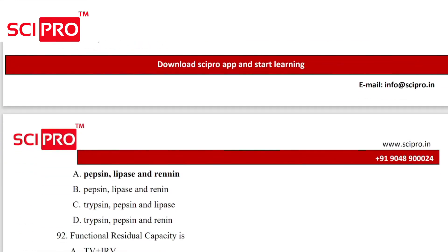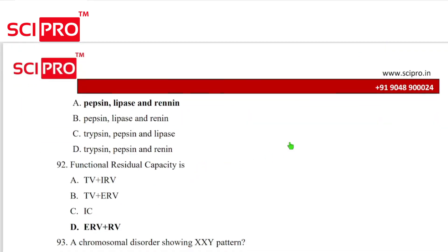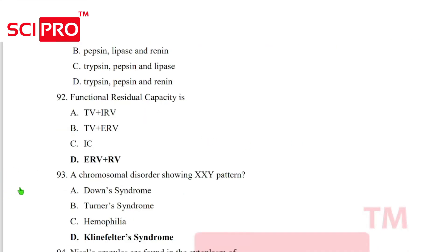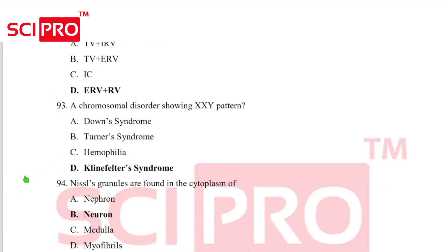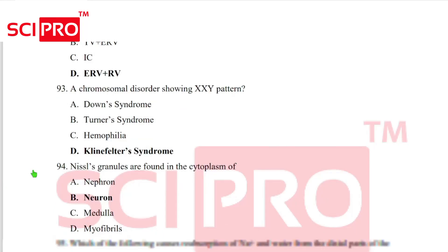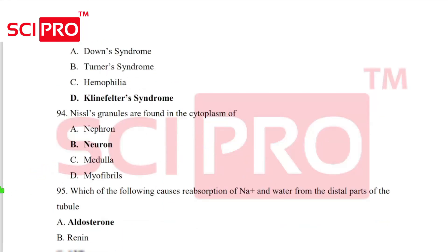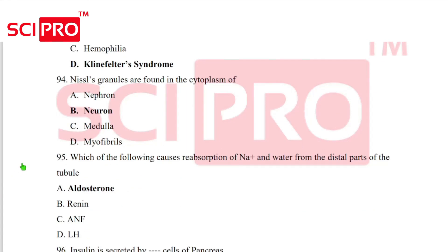Question number 91, gastric juice contains pepsin, lipase and rennin. Question number 92, functional residual capacity is ERV plus RV. Question number 93, chromosomal disorder showing XXY pattern, that is Klinefelter syndrome. Question number 94, Nissl's granules are found in the cytoplasm of neuron. Question number 95, which of the following causes reabsorption of sodium and water from the distal part of tubule? Aldosterone.